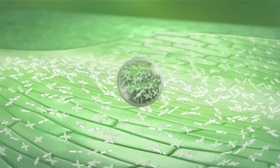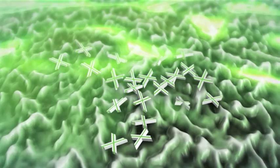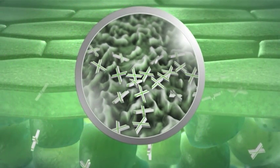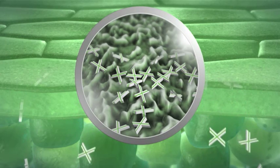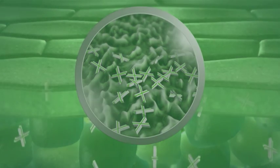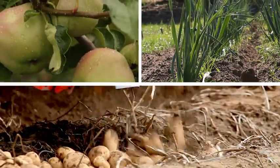The portion of the applied Sercadis that is not taken up into the leaf immediately binds firmly to the wax layer. From these deposits, Sercadis molecules are released continuously into the interior of the leaf throughout the treatment interval. This constant supply of highly systemic Sercadis ensures consistent, continuous protection of the plants throughout the spray interval.